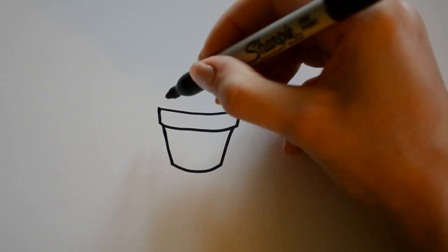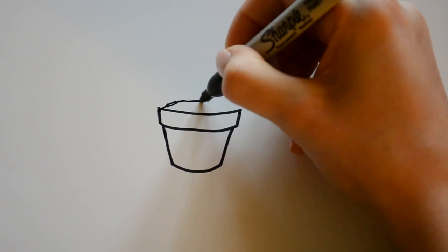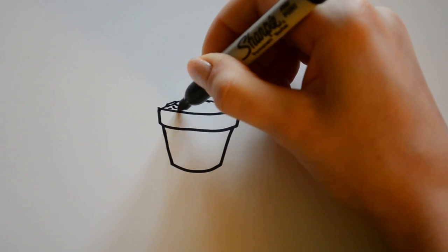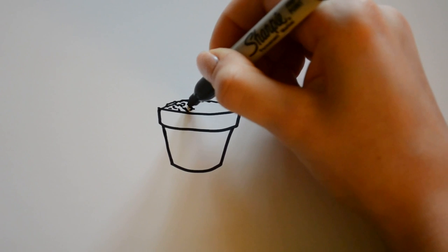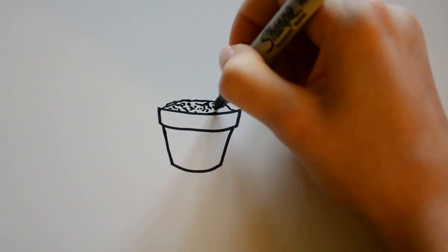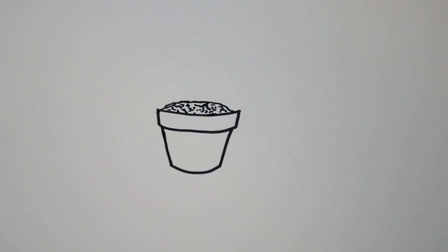Then from there you're going to want to draw the dirt, which is just kind of like a dome with a wiggly line instead of a straight line. And then you can draw some detail, which is just curved dots and lines all over the place. There you go.